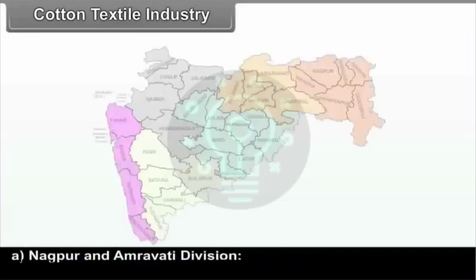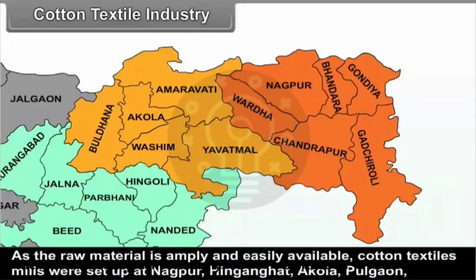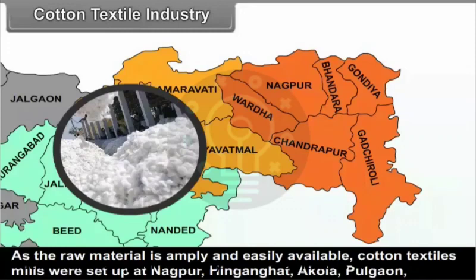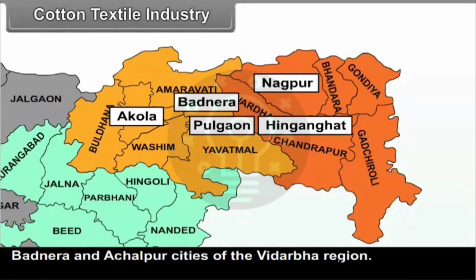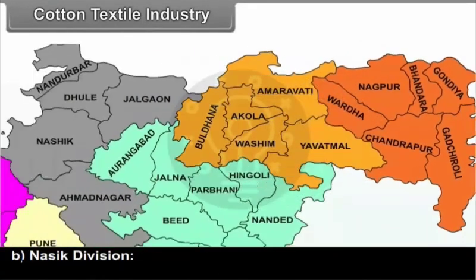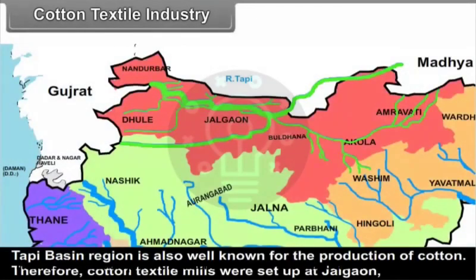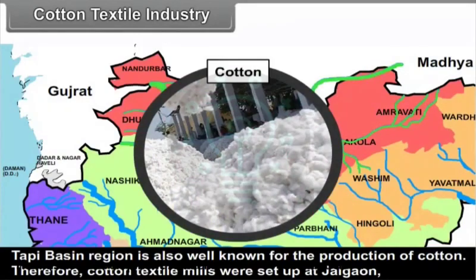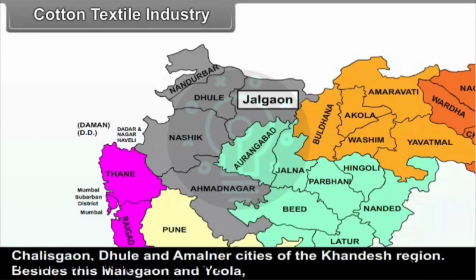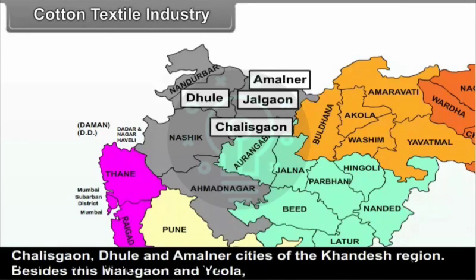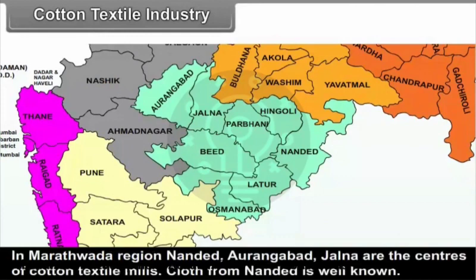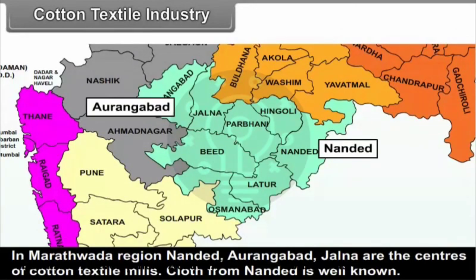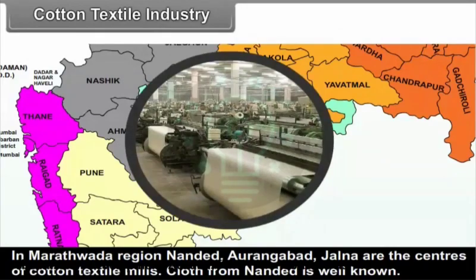Distribution of cotton textile industry: In Nagpur and Amravati Division, cotton textile mills were set up at Nagpur, Hinganghat, Akola, Pulgao, Badnera and Achalpur in the Vidarbha region. In Nasik Division, cotton textile mills were set up at Jalgao, Chalisgao, Dhule, and Amalner in the Khandesh region. Besides this, Malegao and Yavlar in Nasik district also have cotton textile industry. In Aurangabad Division, Nandur, Aurangabad, and Jalna are centres of cotton textile mills.